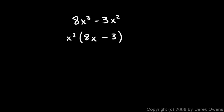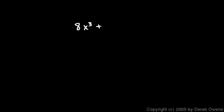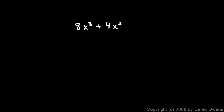The next example is 8x cubed plus 4x squared. The 8 has a factor of 4 in it — 8 can be 4 times 2 — so I'm going to factor a 4 out of both of these terms. Both terms also have an x squared: I see x squared right there, and this x cubed is x squared times x. So I can factor out a 4 and an x squared.